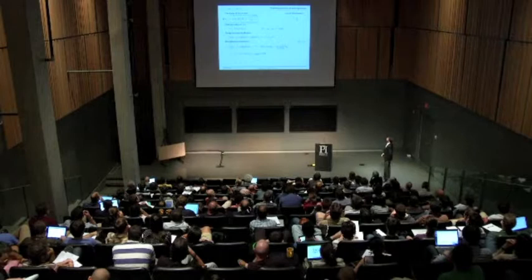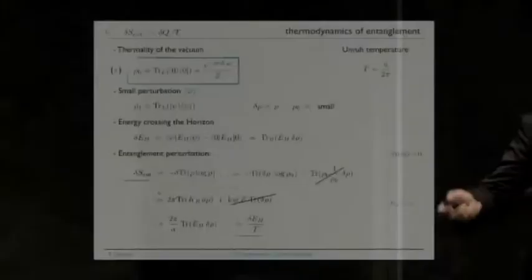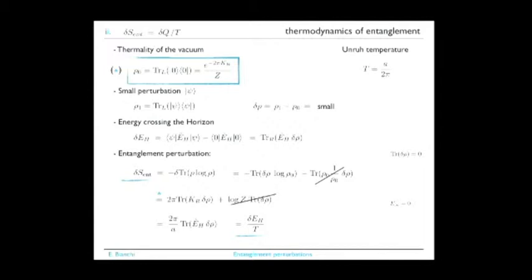In a few steps: first differentiate rho, then log rho. The second part vanishes because the trace of delta rho is zero. The first part is log of rho_0—it brings down the boost: there is a factor of 2π times the trace of K delta rho. You recognize the energy flux through the Rindler horizon, and you recognize the Unruh temperature. This gives you the energy crossing the Rindler horizon measured by this observer divided by the temperature it measures, equaling the change in entanglement entropy. The key assumption is that the perturbation is small—we are not too far from equilibrium. This derivation is the familiar one from statistical mechanics books where the Clausius relation is derived, but here we are seeing where rho is coming from—we are deriving it from entanglement.